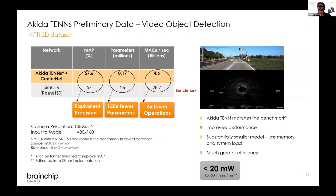Taking the Kitty2D dataset for road scenes: using SimCLR with the ResNet-50 backbone, you get an average precision of about 57. With Akida TNNs using CenterNet, we can get at least the same level of precision but with 150 times fewer parameters and about six times fewer operations. Running at 50 frames per second with a camera resolution of 1380×512, you take less than 20 milliwatts in a seven nanometer process technology node, making sensor processing much more capable at the edge.